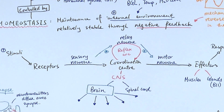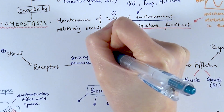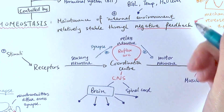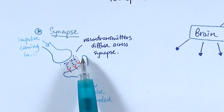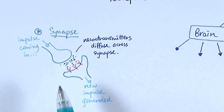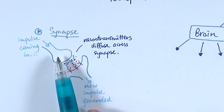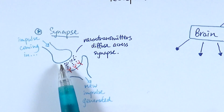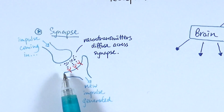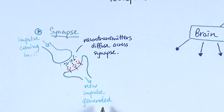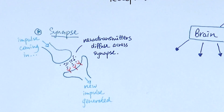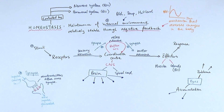Between different neurons are structures called synapses. The synapse is the gap between neurons — electrical impulses cannot jump across this gap. Instead, when a nerve impulse arrives, it triggers the release of chemicals called neurotransmitters. These diffuse across the synapse down the concentration gradient to the next neuron, which has receptors on its cell membrane surface. When these neurotransmitters are received, they trigger a second nerve impulse in the next neuron. This happens relatively quickly, allowing impulses to be transmitted across neurons.